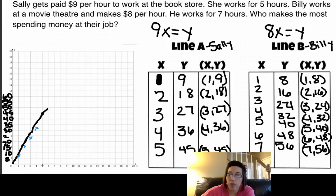Over five, up 40. Over six, would be 48. And over seven, would be up 56. So we go ahead and draw Billy's line, straight as we can.